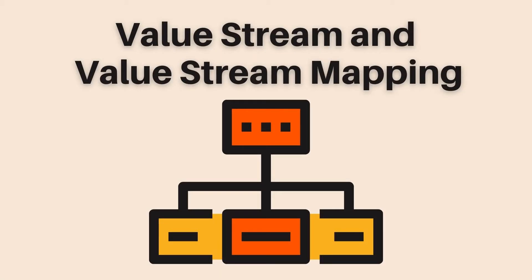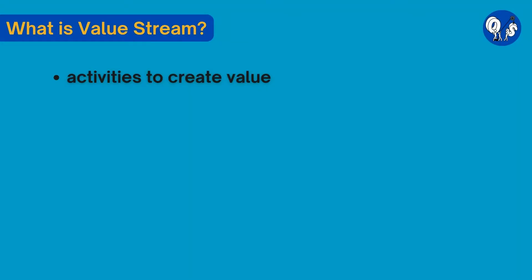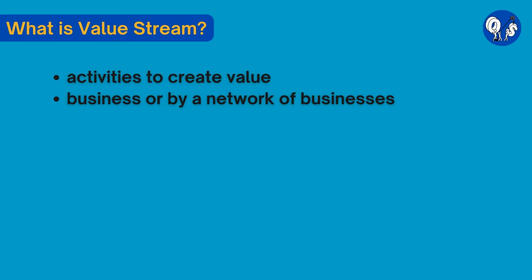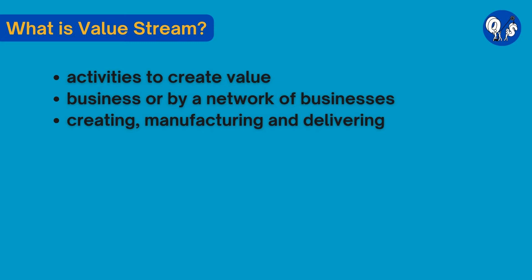Now let's move on to our actual topic: value stream and value stream mapping. What is value stream? A value stream describes how an enterprise organizes its activities to create value. It can be controlled by a single business or by a network of businesses. Every company has a set of steps or processes like creating, manufacturing, and delivering in order to sell the product or service to the end customer. All these steps or processes are known as value stream.